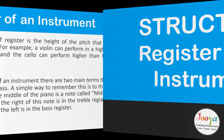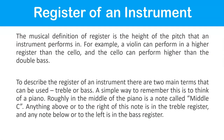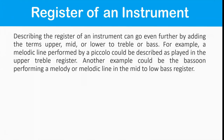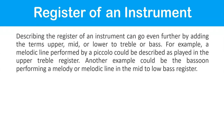The musical definition of register is the height of the pitch that an instrument performs in. For example, a violin can perform in a higher register than the cello, and the cello higher than the double bass. To describe register, two main terms are used: treble or bass. Think of a piano — anything above or to the right of middle C is in the treble register, and anything below or to the left is in the bass register. You can go further by adding upper, mid, or lower — for example, a piccolo could be described as playing in the upper treble register, and a bassoon in the mid to low bass register.